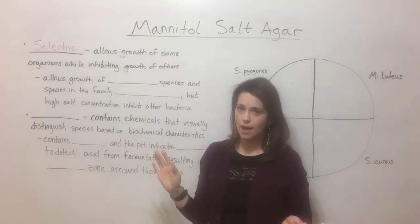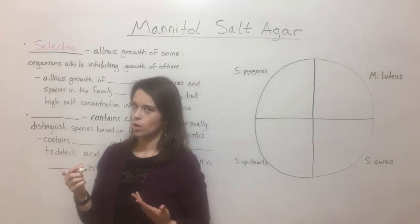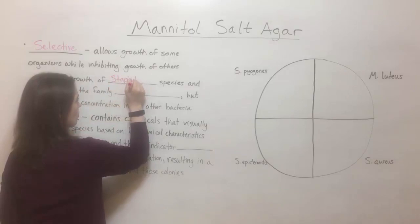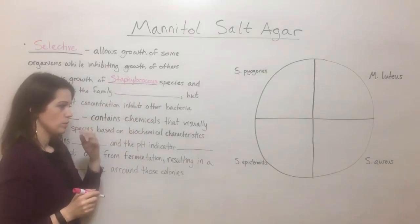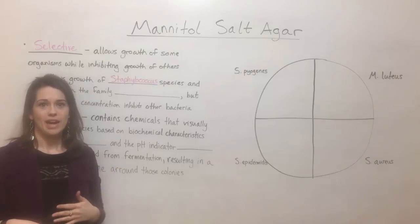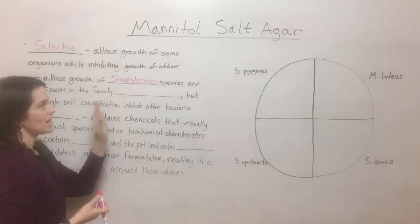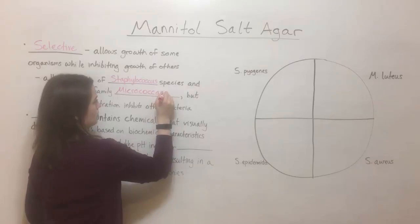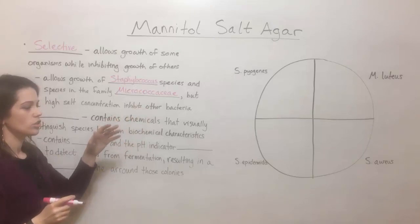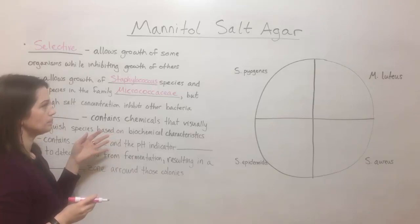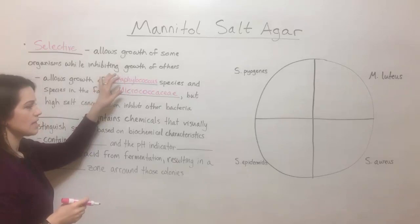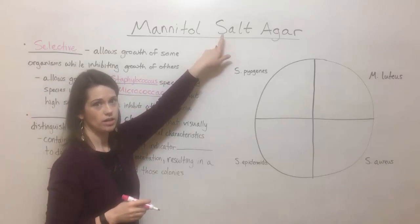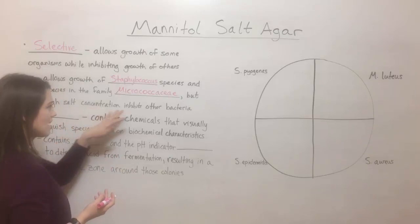Specifically, mannitol salt agar allows the growth of Staphylococcus species, such as Staphylococcus aureus or Staphylococcus epidermidis — if you hear someone talking about a staph infection, it's an infection by some species within this genus. It also allows bacteria in the Micrococcaceae family, for example Micrococcus luteus, to grow. The reason these two groups can grow is because they can survive the relatively high salt concentration of this agar, which is about eight to ten percent salt, and that tends to inhibit other bacteria.